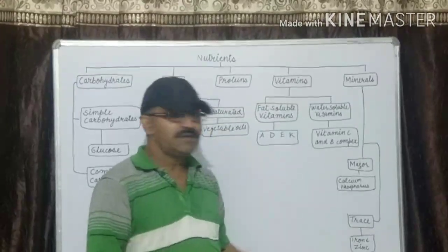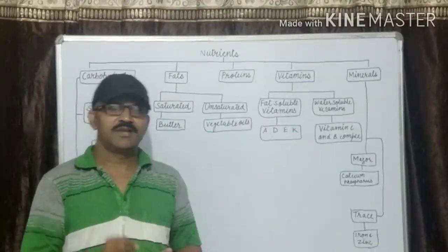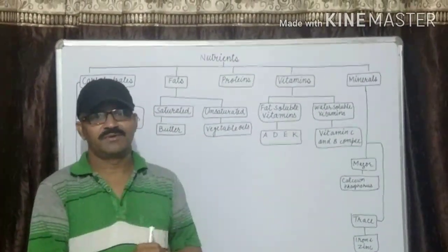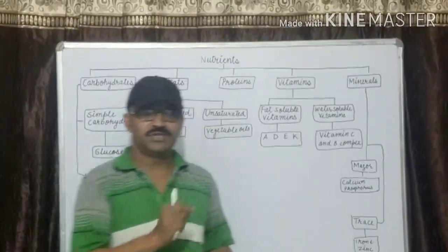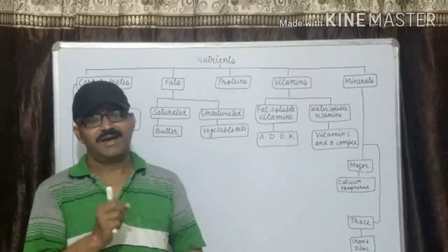Next is trace. These types of minerals are required in a less amount for our body. Examples: iron, zinc, copper, iodine.